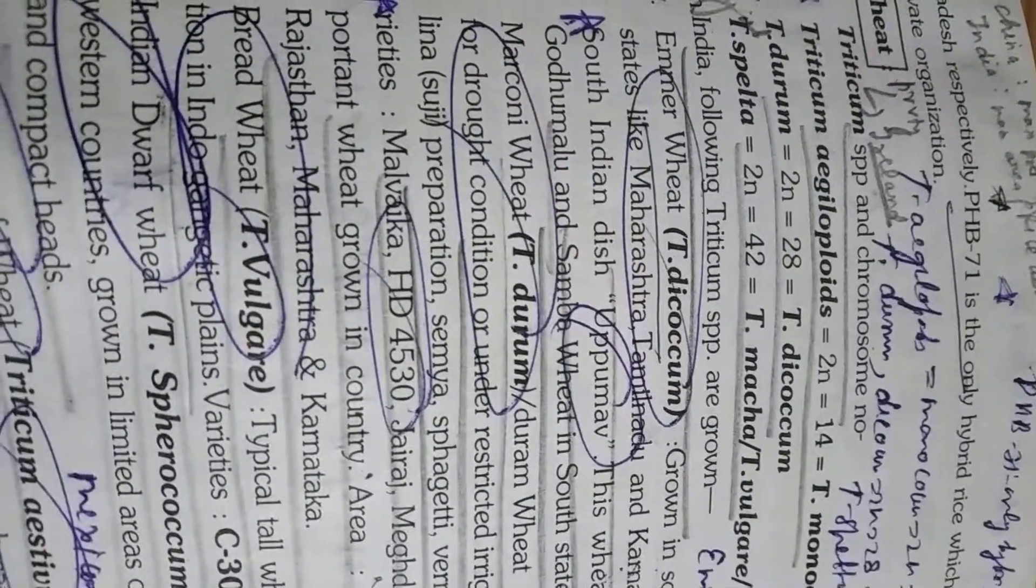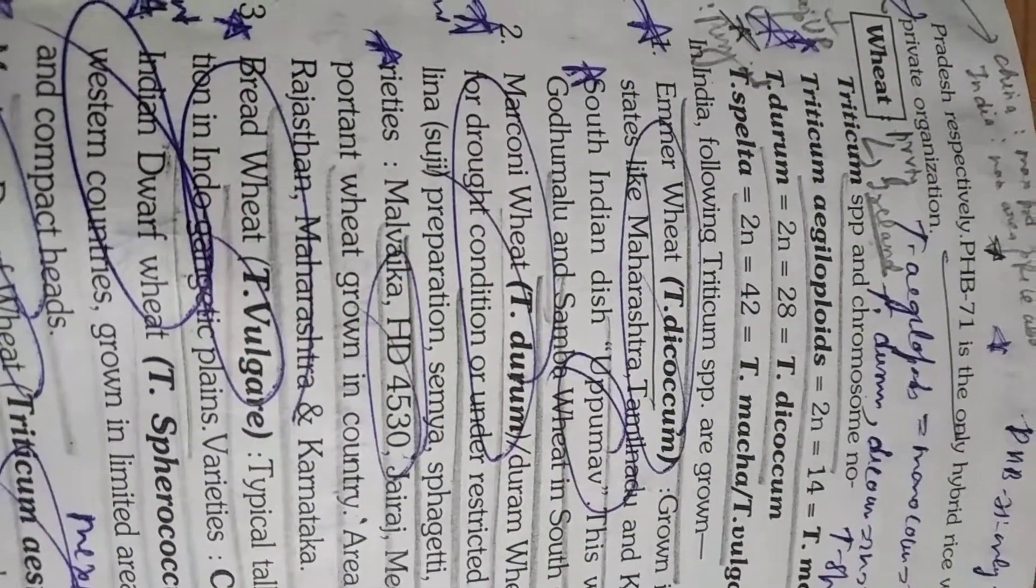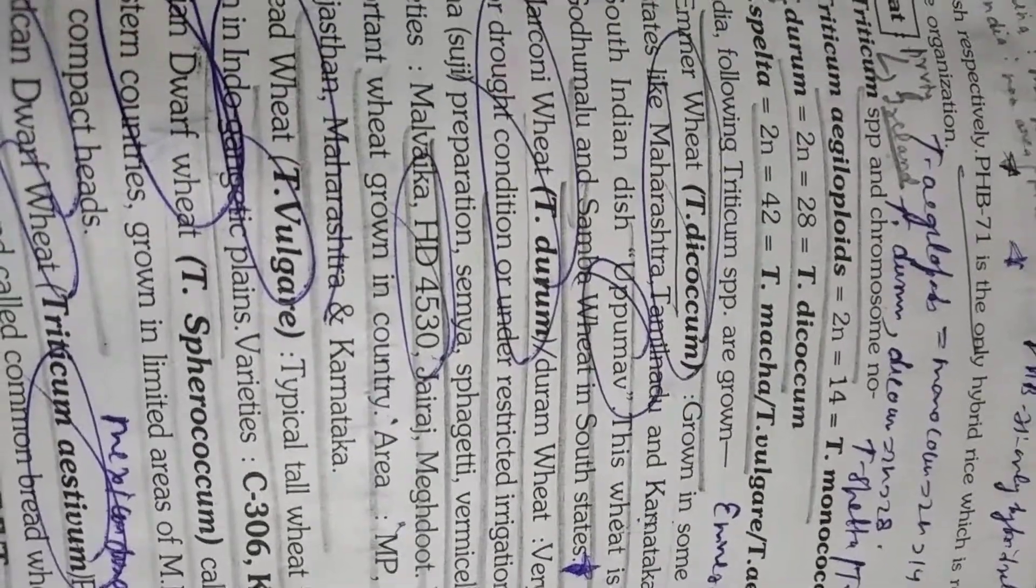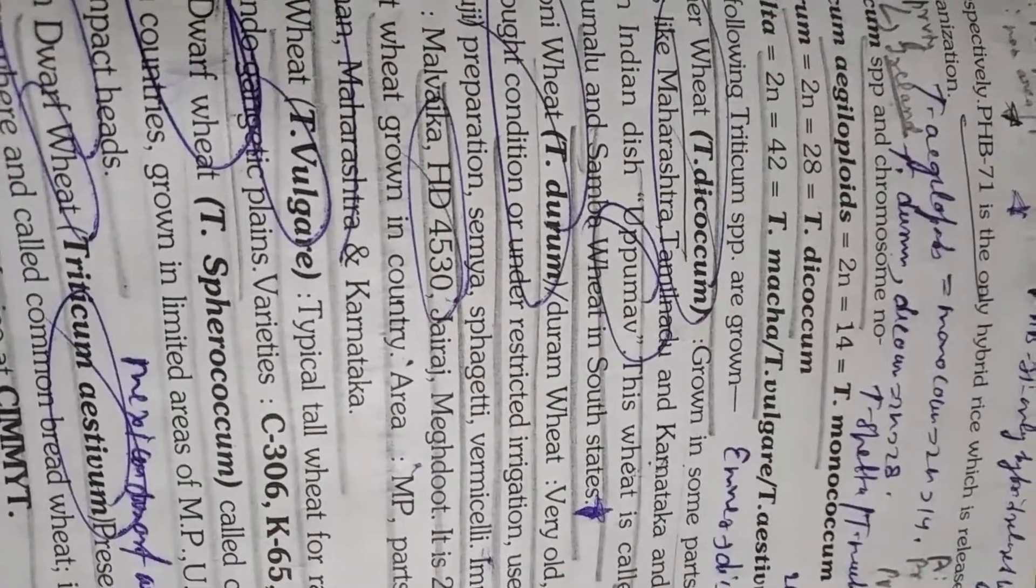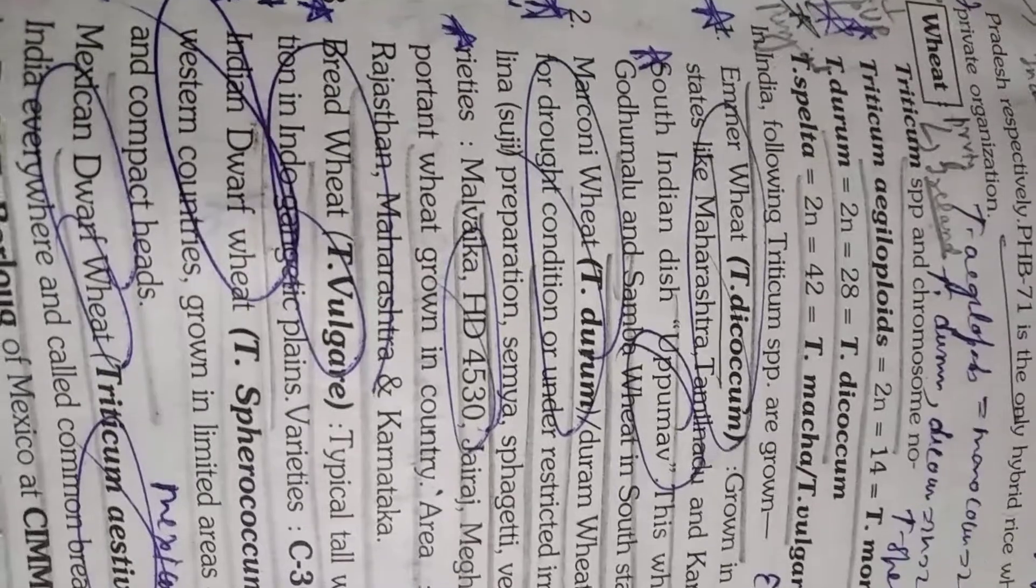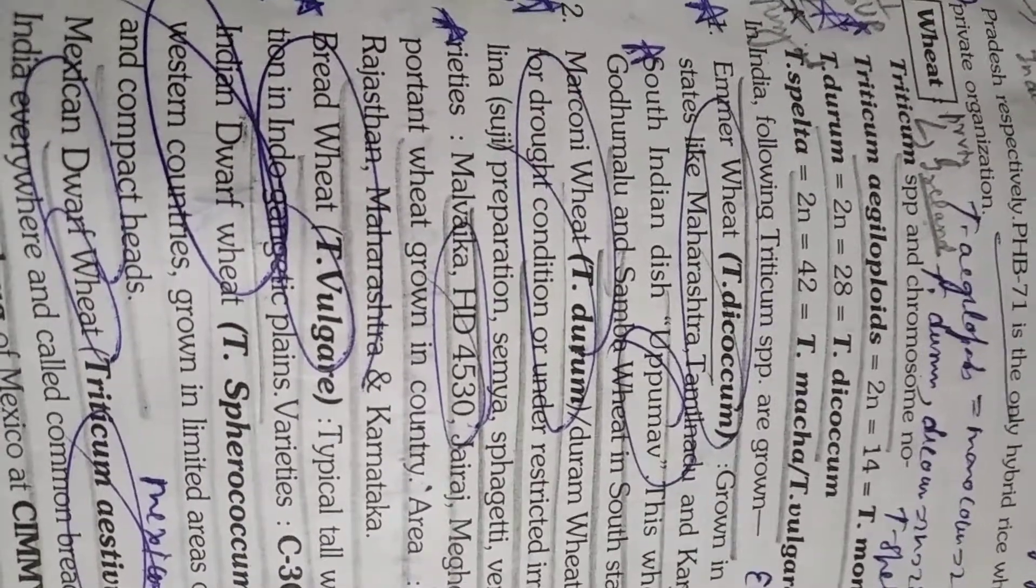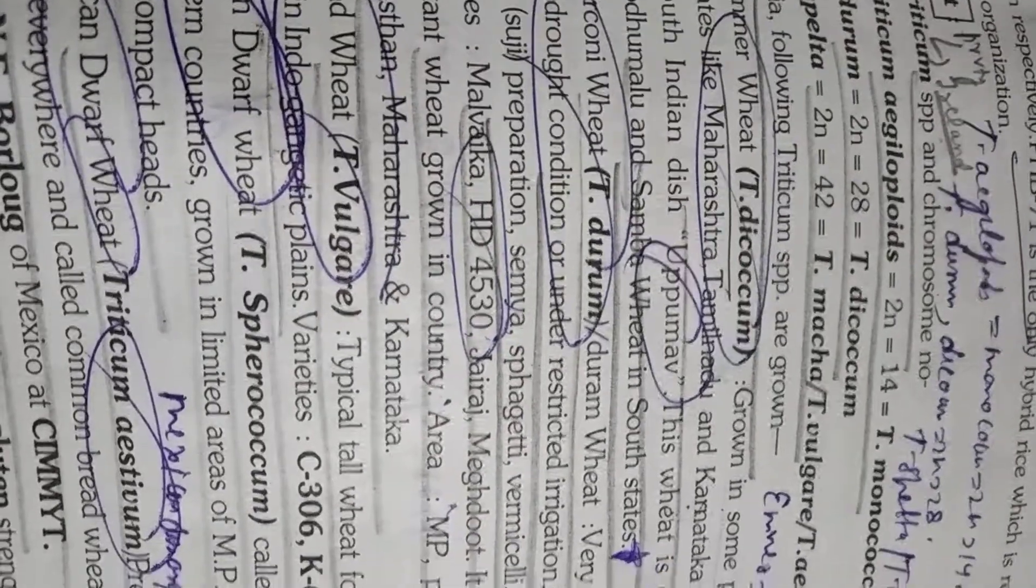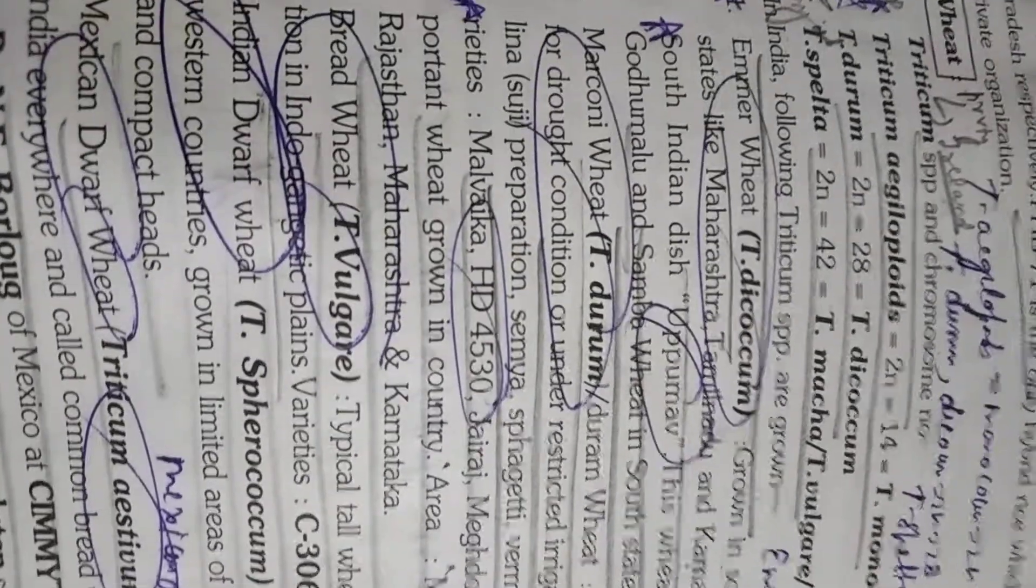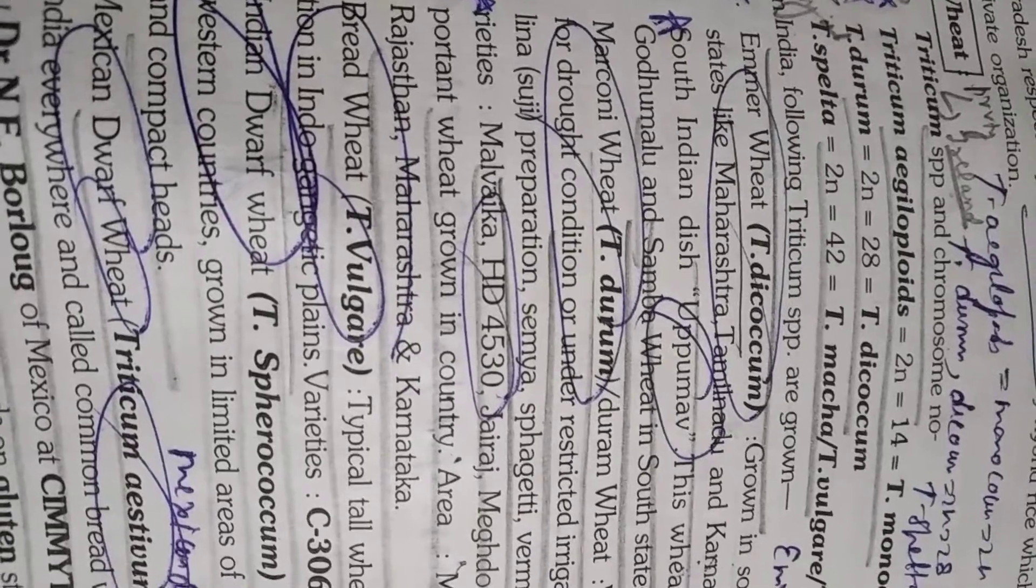Please remember the chromosome number of some important species of Triticum. Triticum species aegilopoids and monococcum has 2n equals 14. 2n equals 28 is present in durum and dicoccum, and Triticum spelta, Triticum macha, Triticum vulgare, Triticum aestivum has 2n equals 42. Please students remember these.